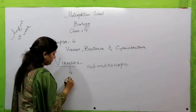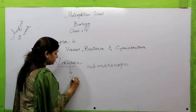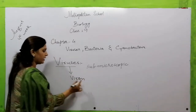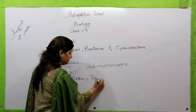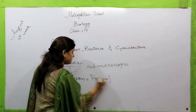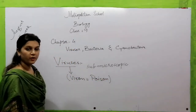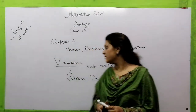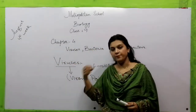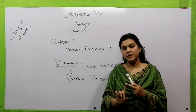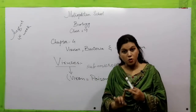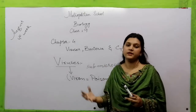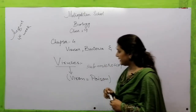The Latin word 'viron' means poison. The word virus comes from 'viron' which means poison. So viruses are the smallest, submicroscopic, and primitive organisms.